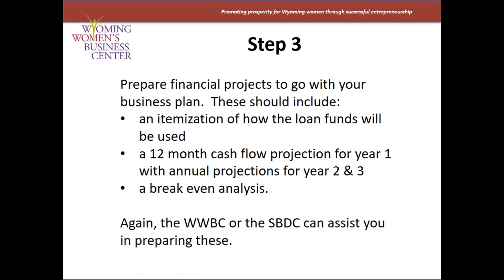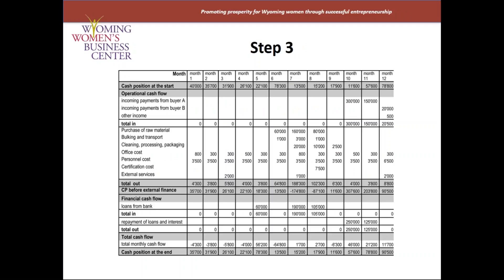Here's an example of what a monthly cash flow would look like. You're looking at income — when you're going to have sales, when you're going to receive payments. Here you're looking at what expenses you're going to have and when they're going to occur. It shows the money coming in, the money going out, and what your balance is. If you have a negative balance at the cash position, that means you're going to need to borrow money for those months.